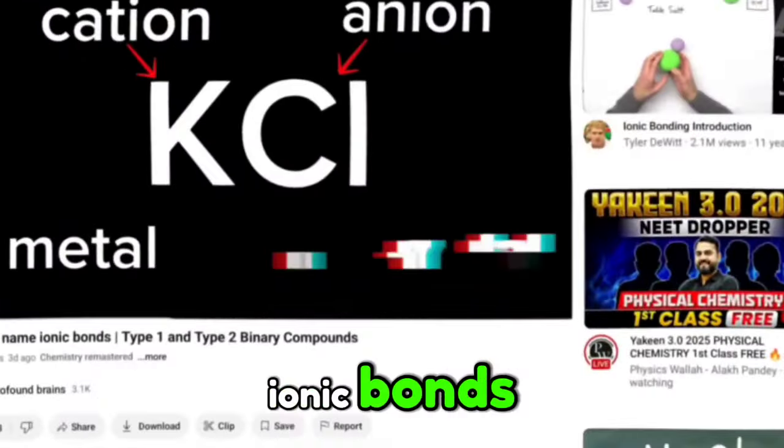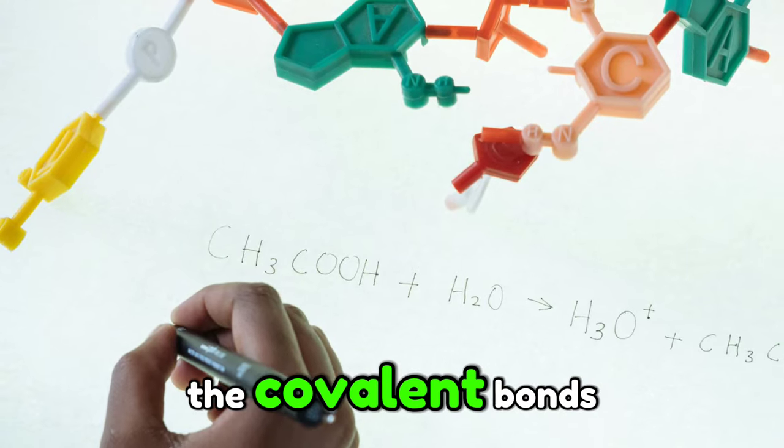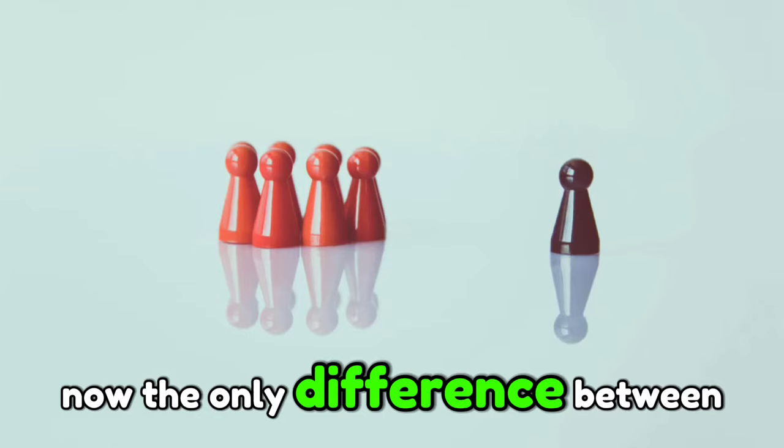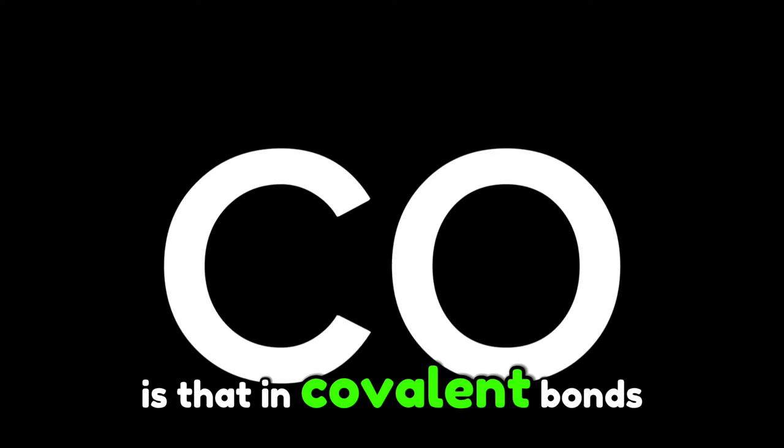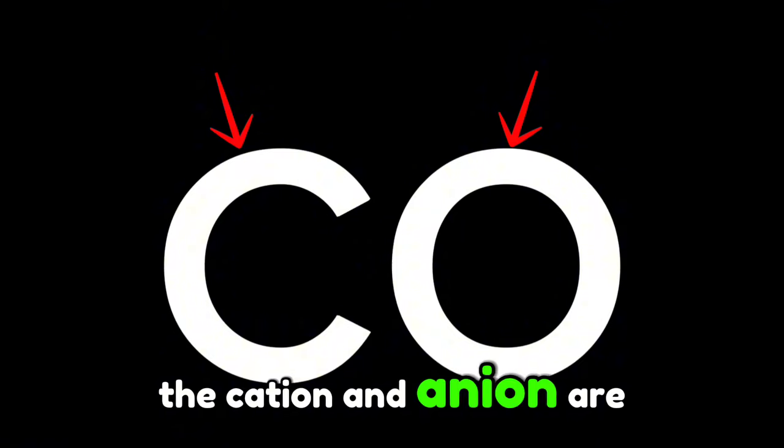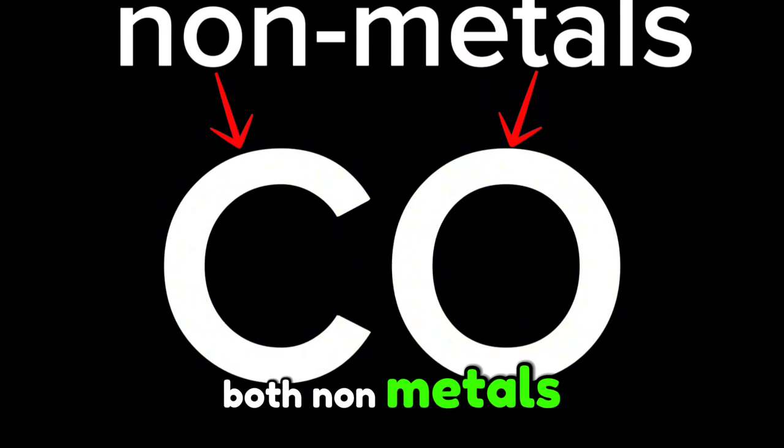We've just finished naming ionic bonds and it's time to name covalent bonds. The only difference between ionic bonds and covalent bonds is that in covalent bonds, the cation and anion are both non-metals. Let's get into it.